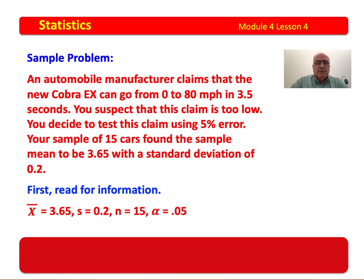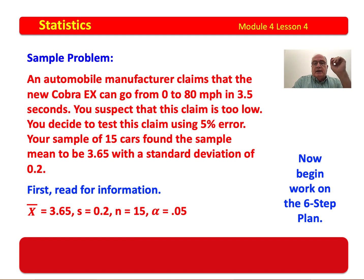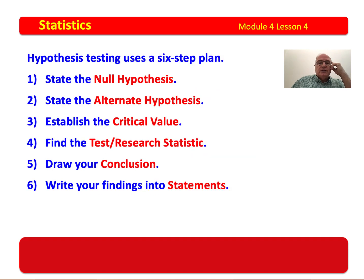First, you read for information. X-bar is 3.65, S is 0.2, the number in the sample is 15, and alpha equals 0.05. Our population mean is 3.5, our sample standard deviation is 0.2, the number in the sample is 15, and the error equals 0.05. Now begin your work on the six-step plan.